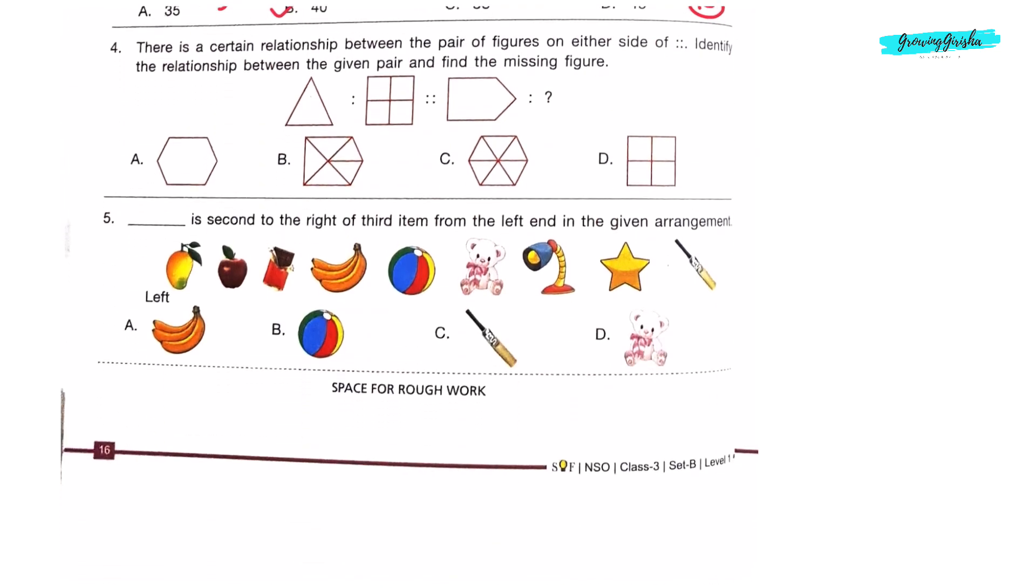Question 4: There is a certain relationship between the pair of figures on either side of colon. Identify the relationship between the given pair and find the missing figure. In the left pair, the number of sides of first figure is increased by 1 to get the second figure and also it is divided into 4 equal parts. So on the right pair, this is a pentagon which has 5 sides. So here a figure will come which has 6 sides. Shape with 6 sides is called hexagon, and this hexagon will be divided into 6 parts which is in option C.